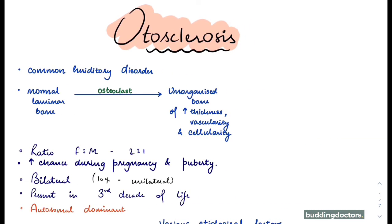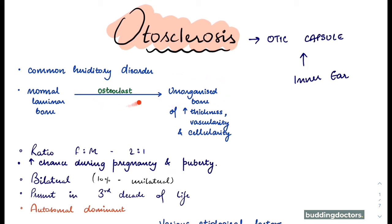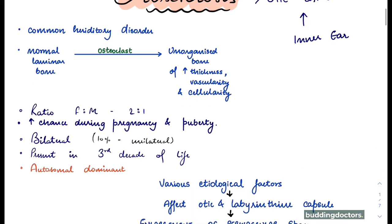So what is otosclerosis? It is a common hereditary disorder derived from the otic capsule. The inner ear develops from the otic capsule. In otosclerosis, the normal lamellar bone is converted into unorganized bone by osteoclasts, which removes the lamellar bone and converts it into unorganized bone that has increased thickness, vascularity, and cellularity.